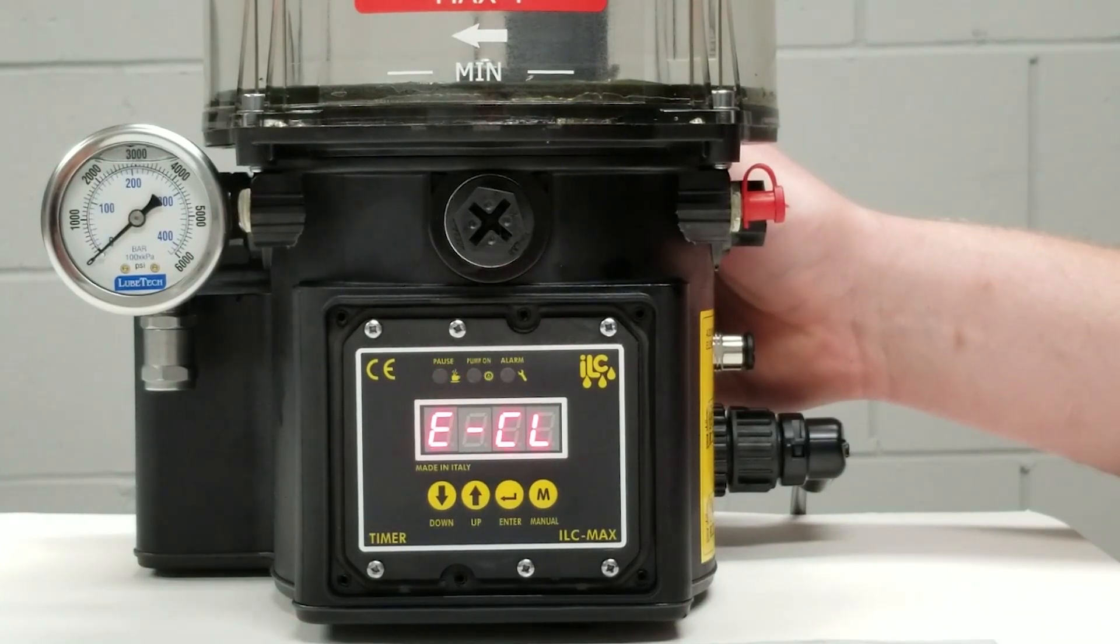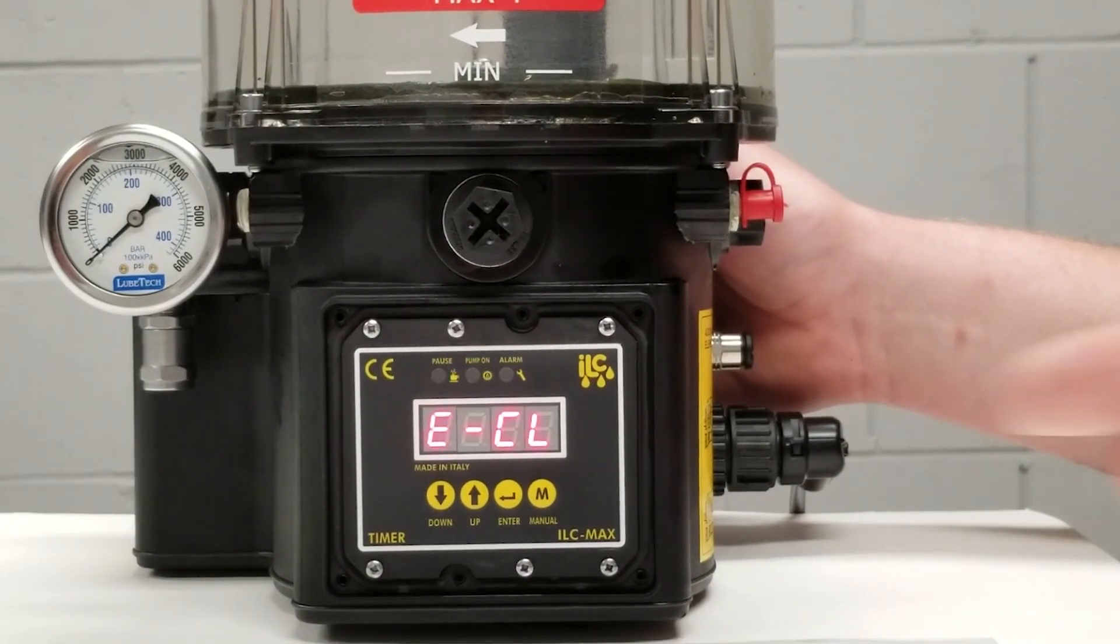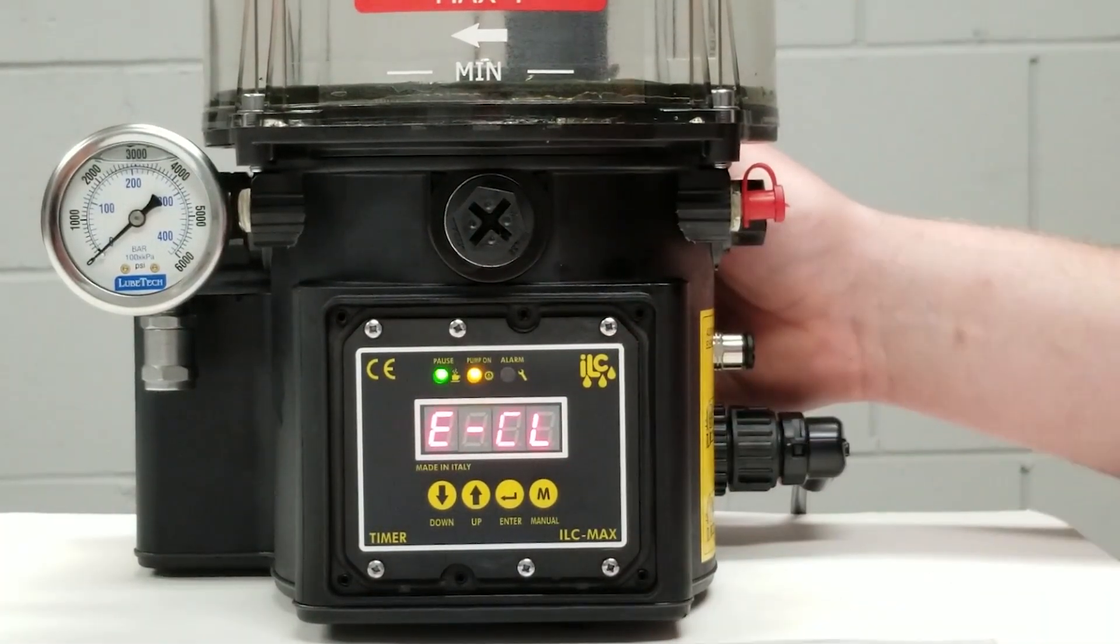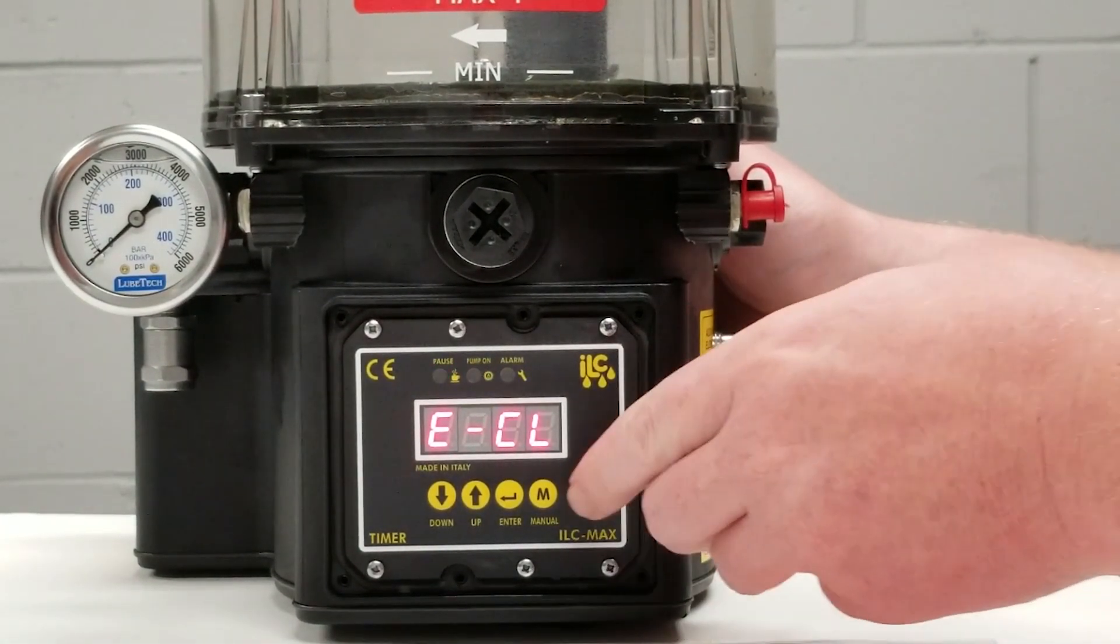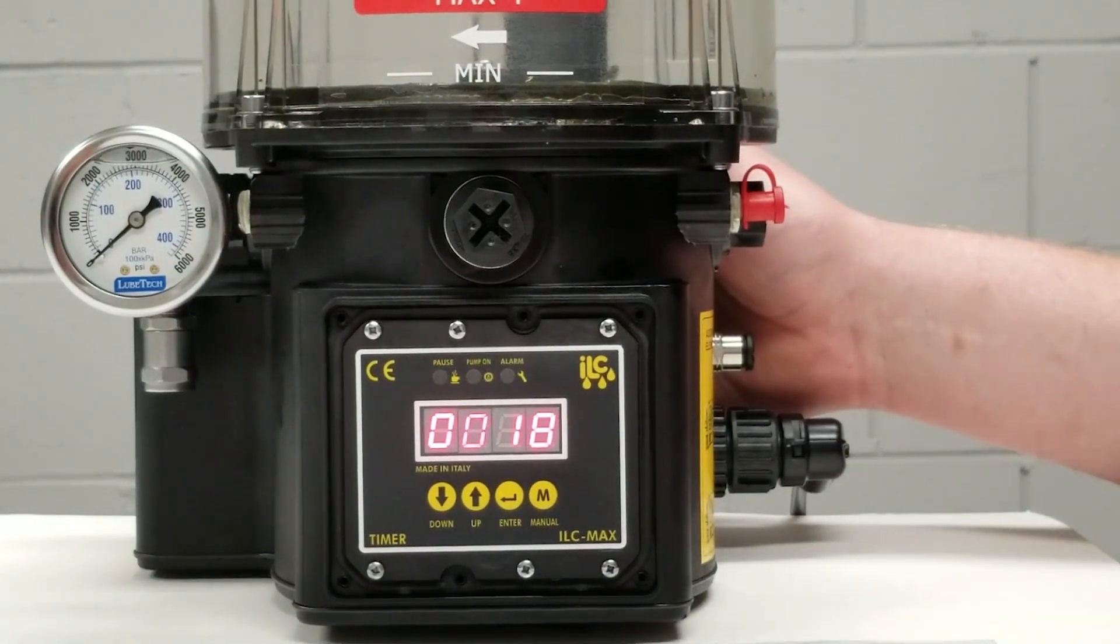And this particular pump is set up to pump in rotation count. E-CL will tell me how many rotations this pump is set for. Again we're going to press our M button to enter that parameter and see what the setting is.